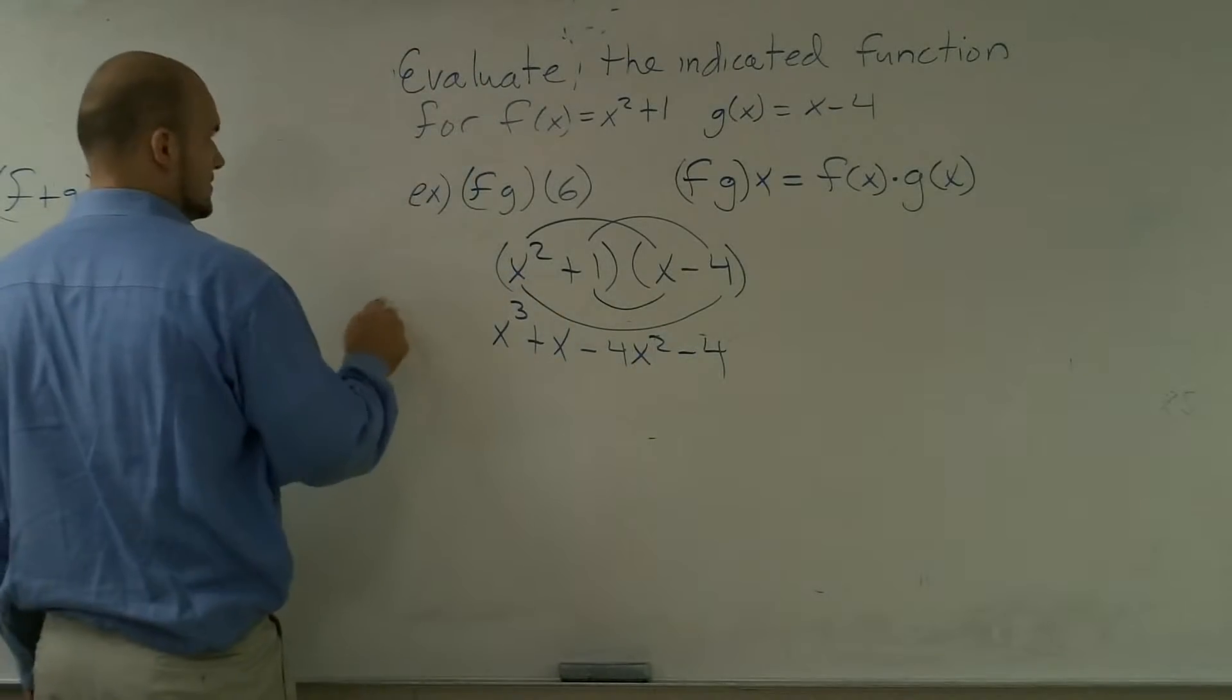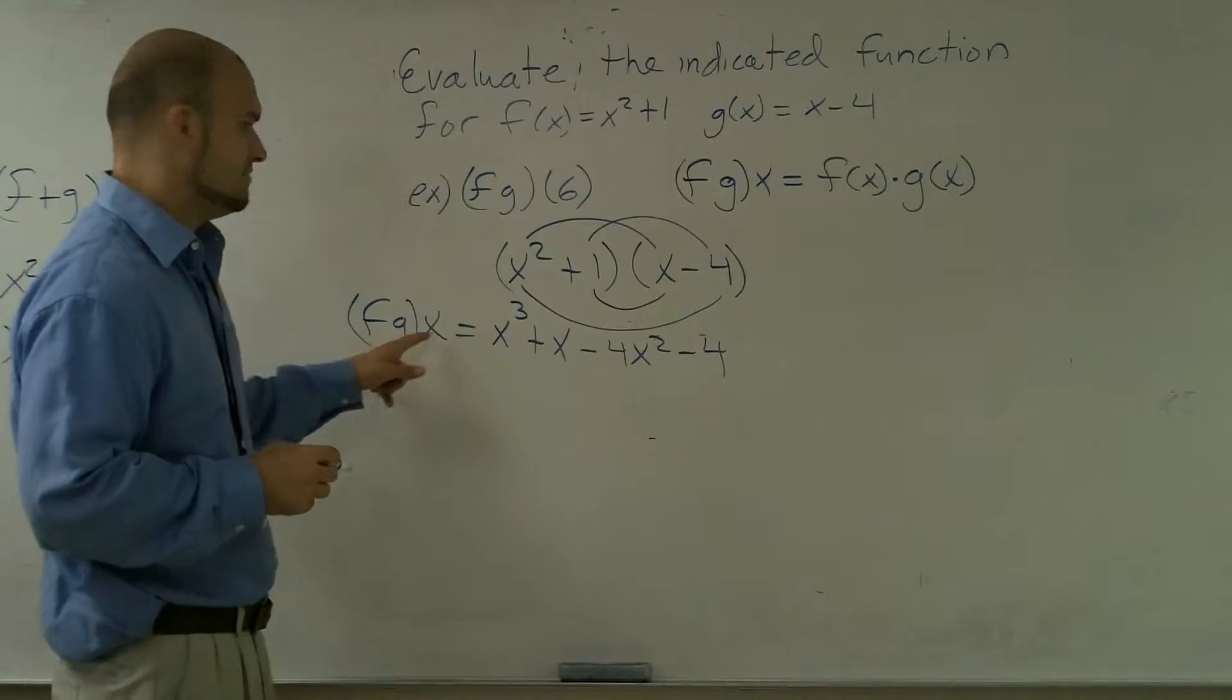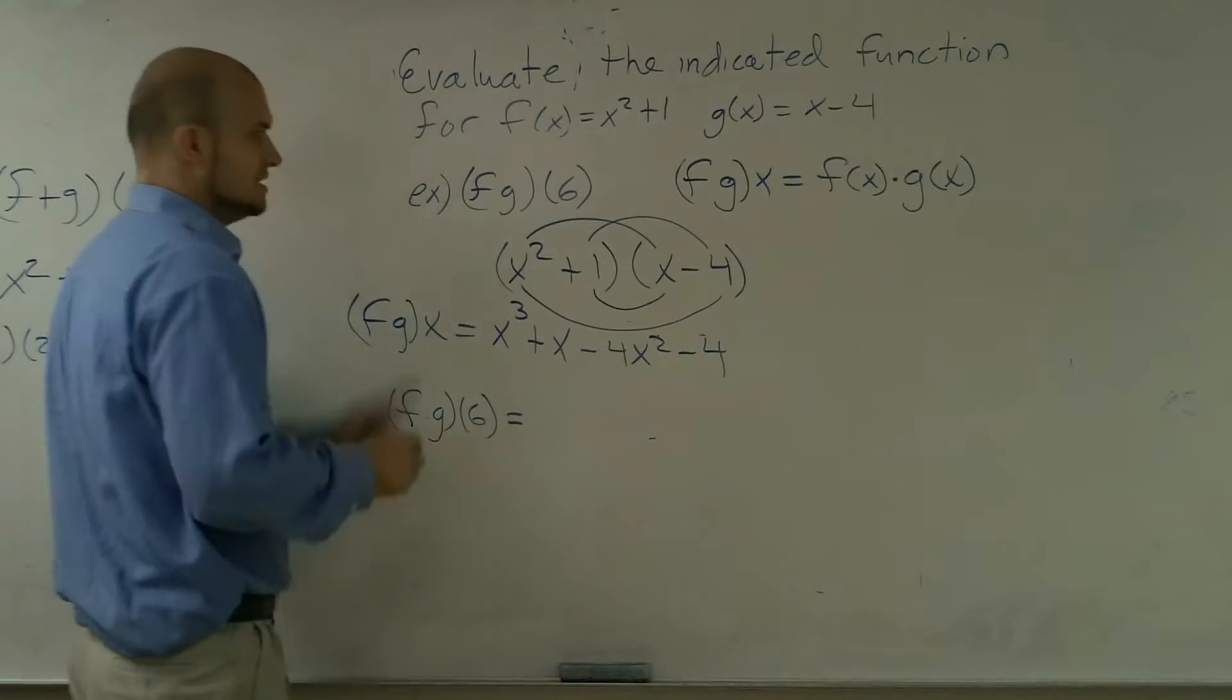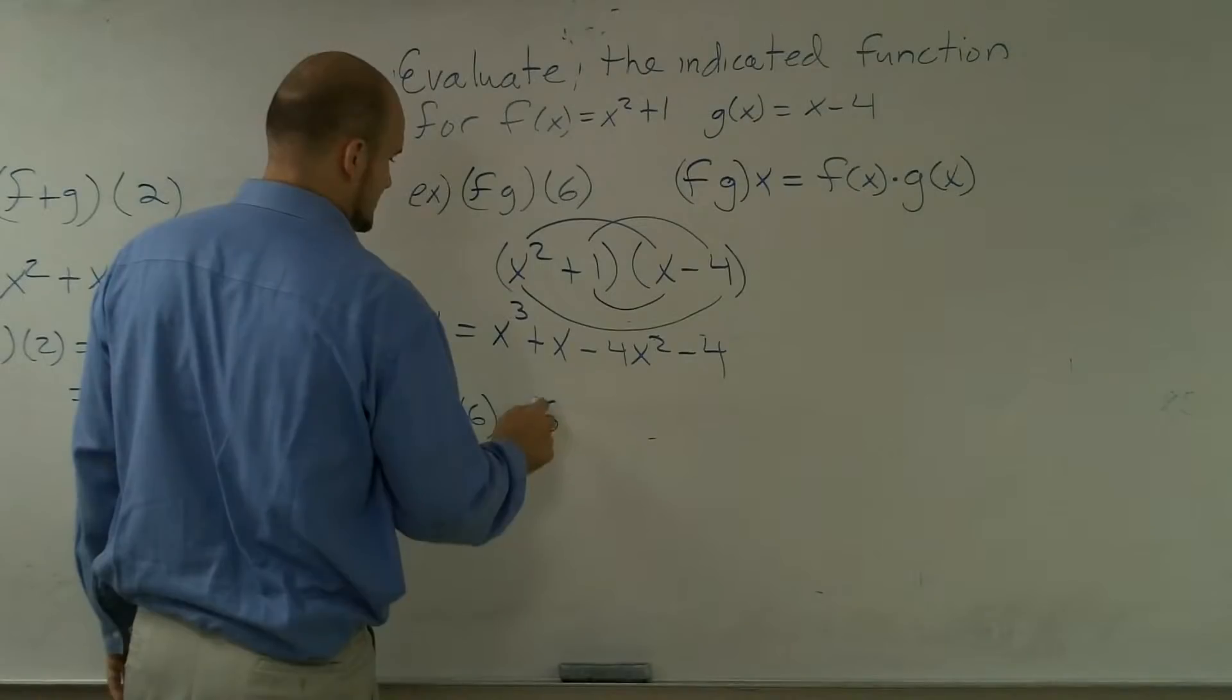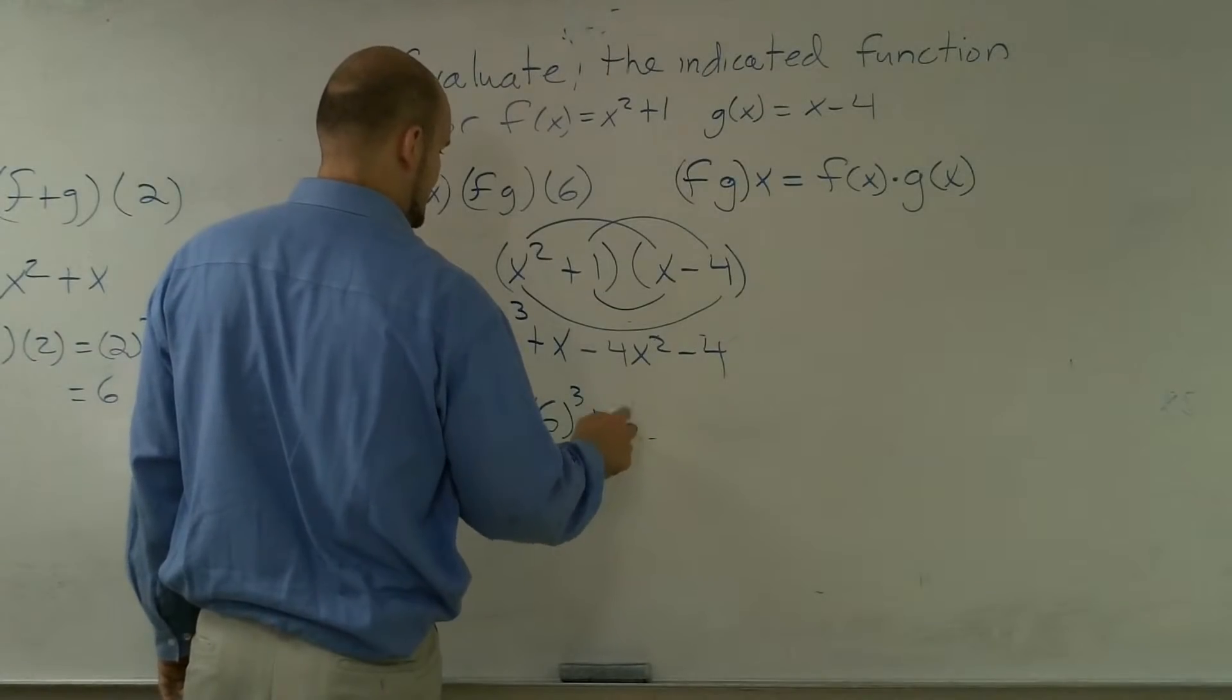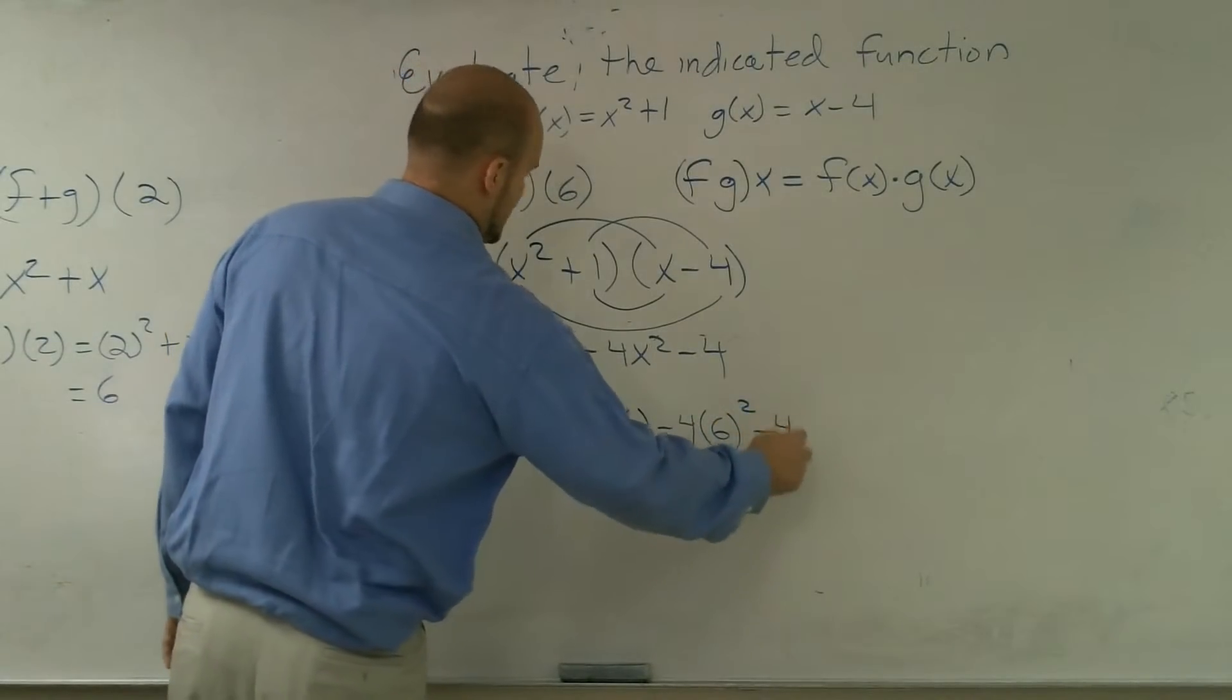So therefore, f times g of x equals that. And then now when I want to go ahead and evaluate that for 6, f times g of 6, now you're just going to plug in your 6 into your equation. So I have 6 cubed plus 6 minus 4 times 6 squared minus 4.